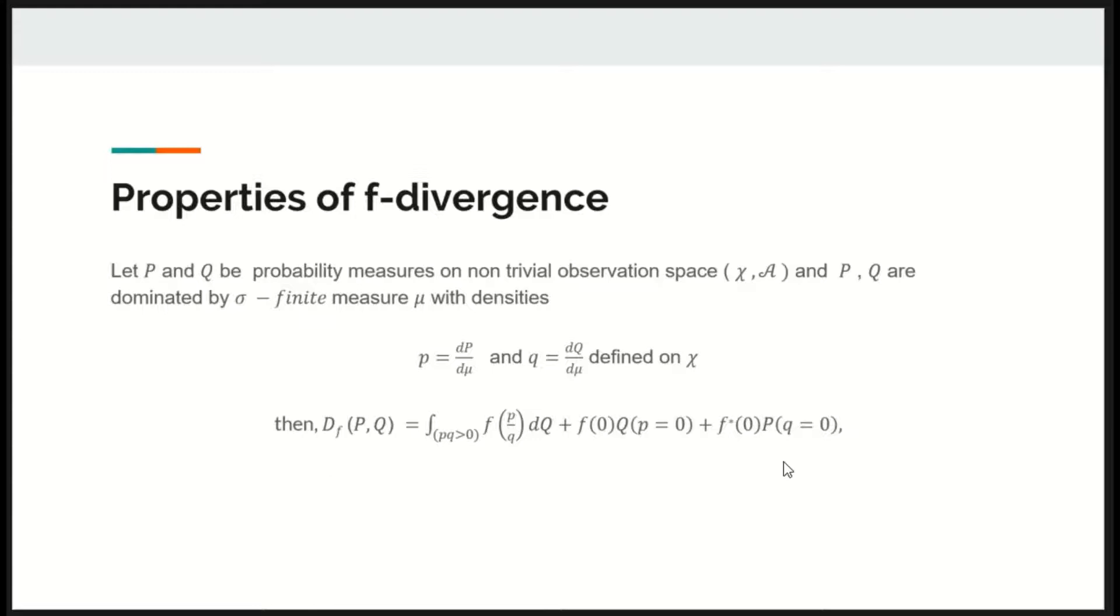Then F-divergence between P and Q is defined as this equation. We divided the equation into three parts. In the first part both P and Q are positive. In the second part P is 0. In the third part Q is 0.